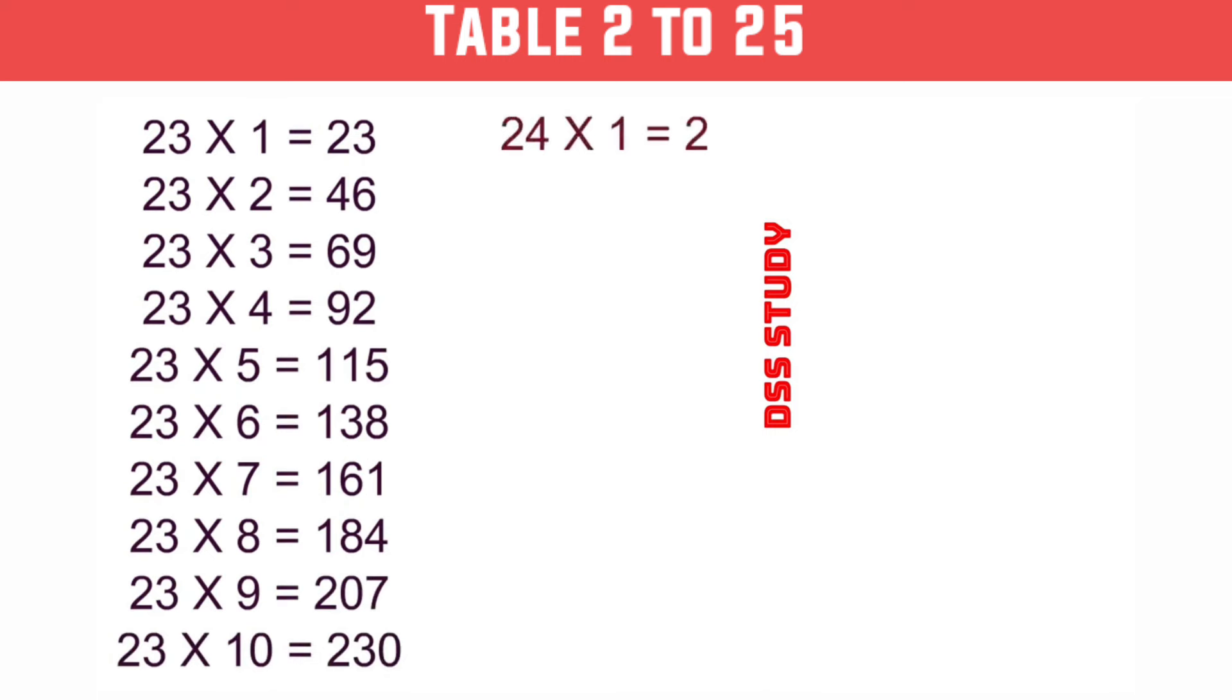24×1 is 24, 24×2 is 48, 24×3 is 72, 24×4 is 96, 24×5 is 120.